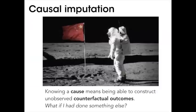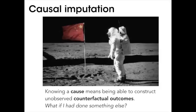The other perspective is the counterfactual or explanatory view. If you know the causes of something, you'd be able to reconstruct unobserved counterfactual outcomes — for example, if the Soviets had gotten to the moon before the Americans. This perspective uses the same mechanics as the previous one, but has a very different purpose: explaining the world we're in and why it didn't turn out differently. It's about explanation and imagination, as opposed to the applied view of trying to predict what would happen if we did something. Structurally they're the same — but the purpose is different.